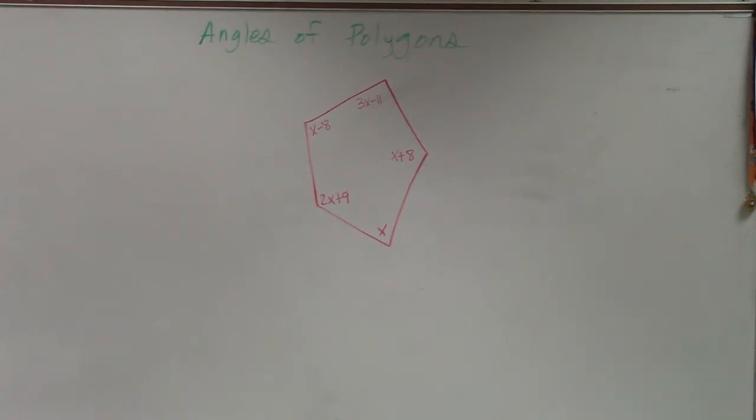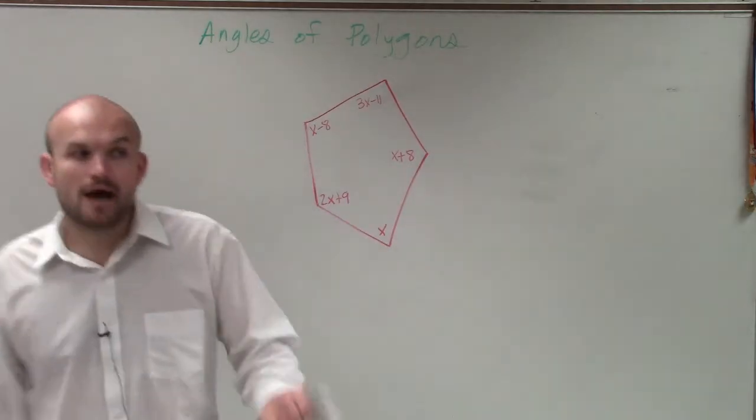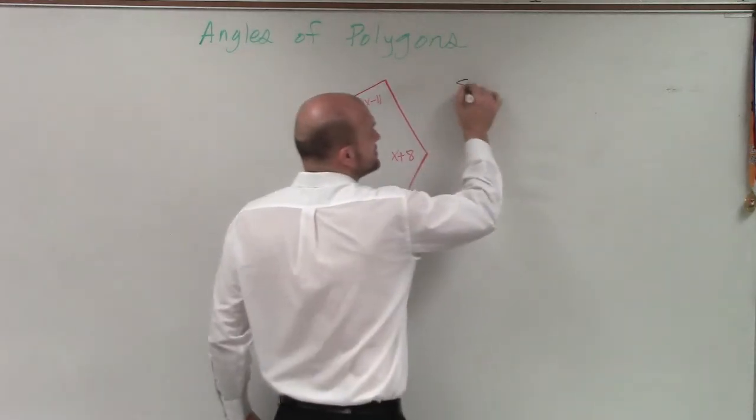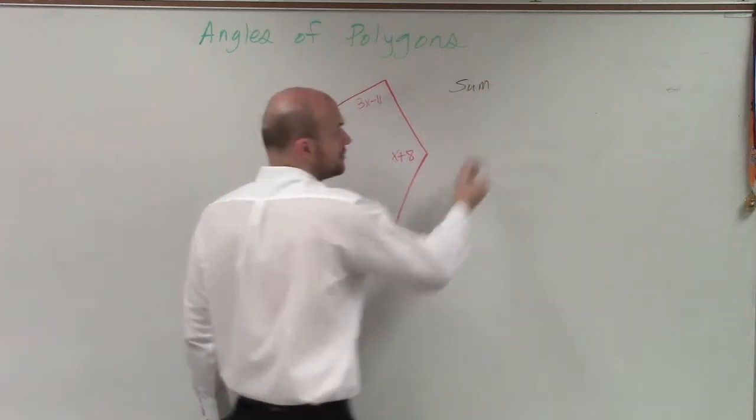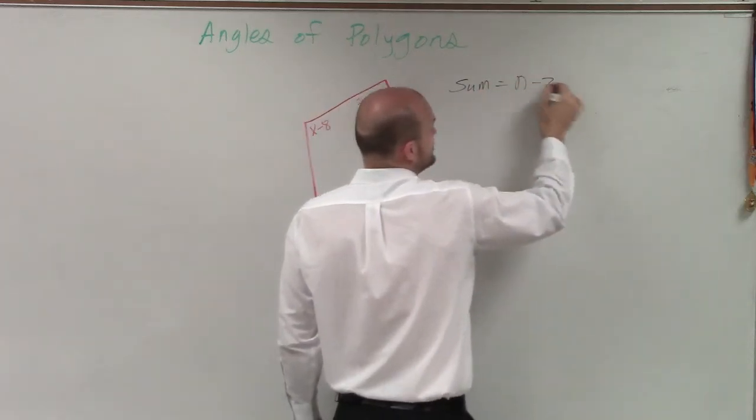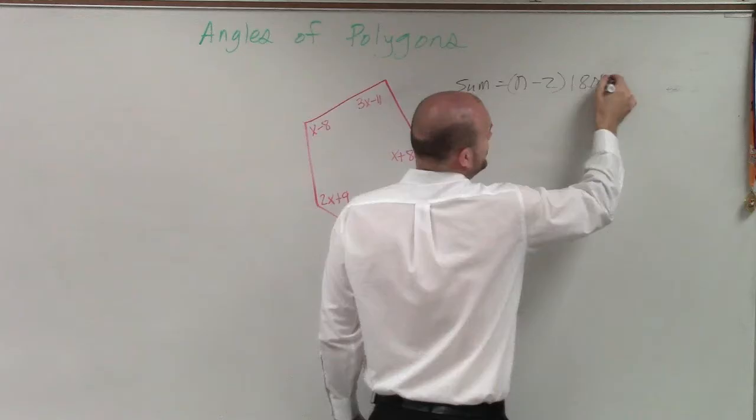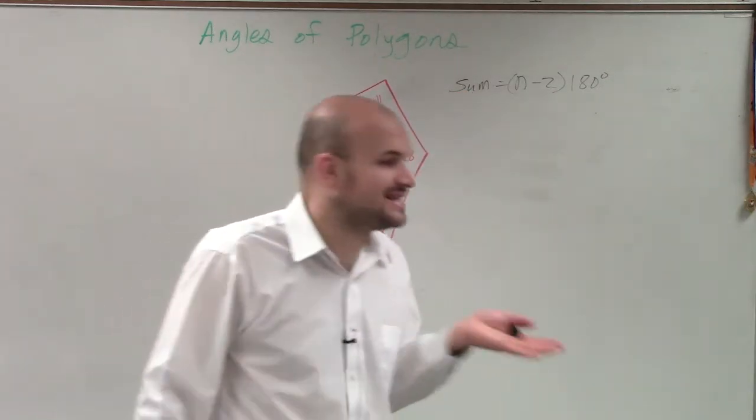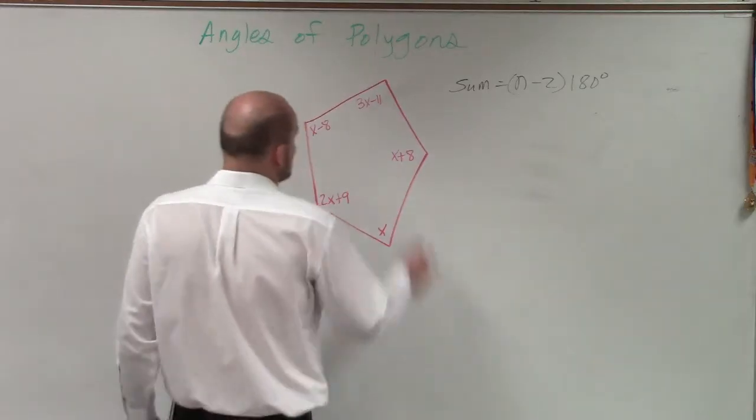So if I was looking at a question like this on number 19, the first thing I would do is determine how many sides do I have. Because I'm talking about interior angles, I know the sum of interior angles is equal to n minus 2 times 180 degrees. But n represents the number of sides, so I need to determine how many sides I have.